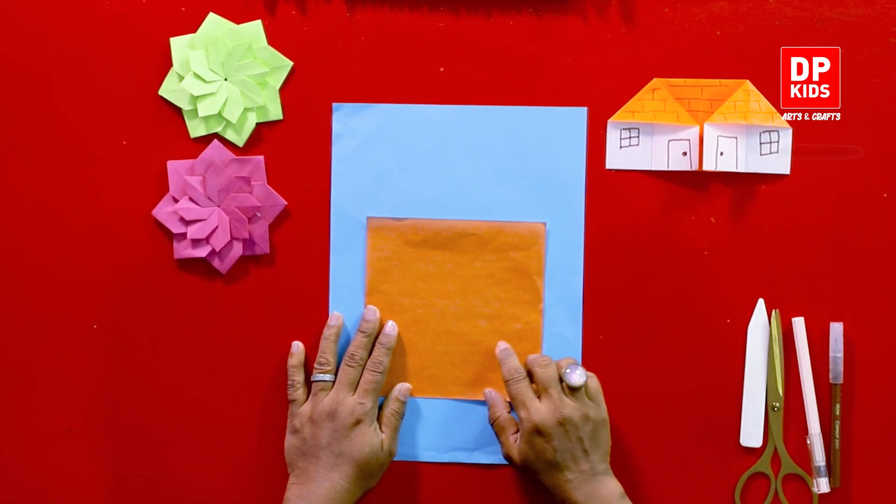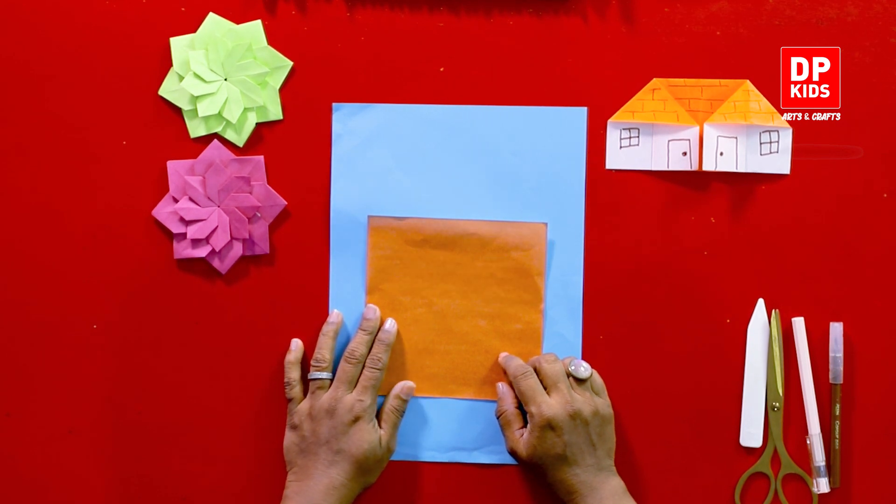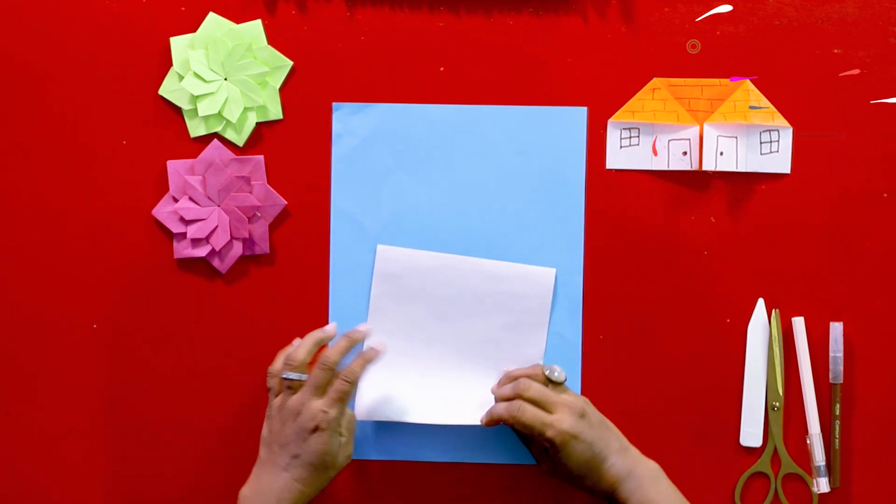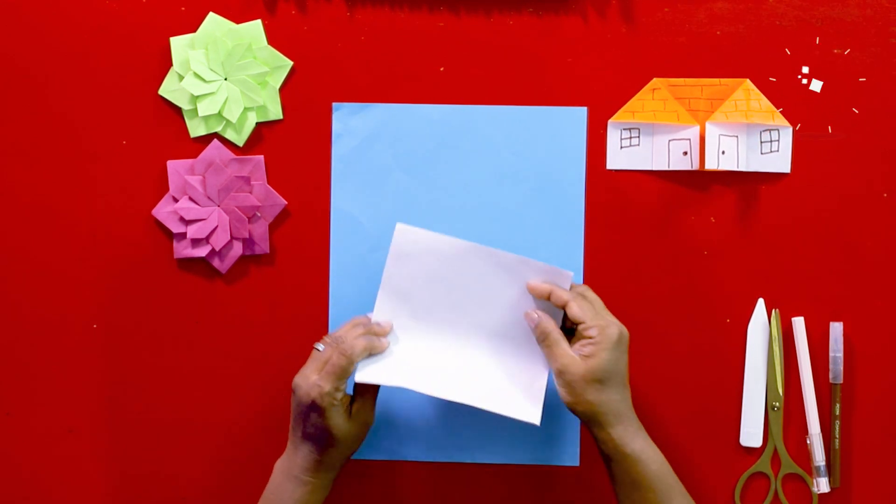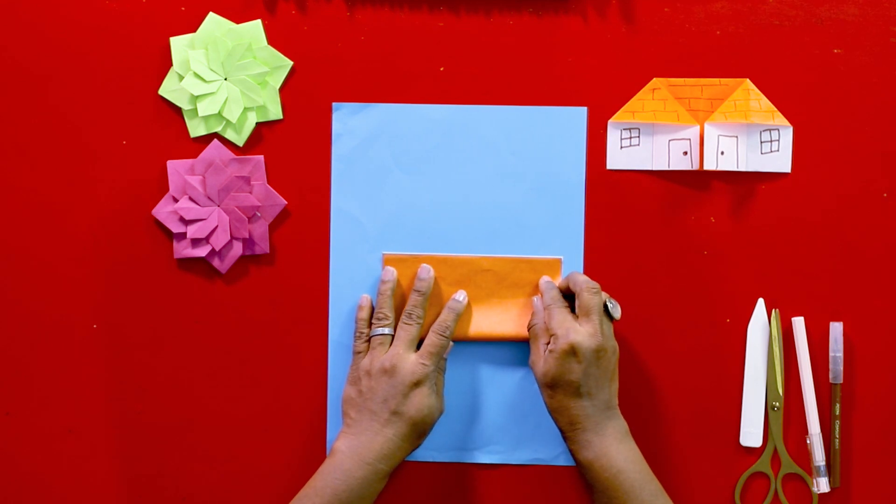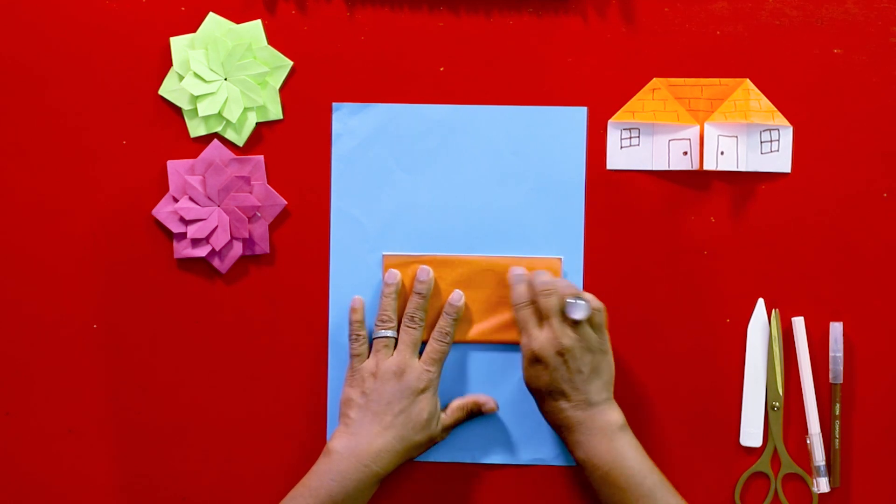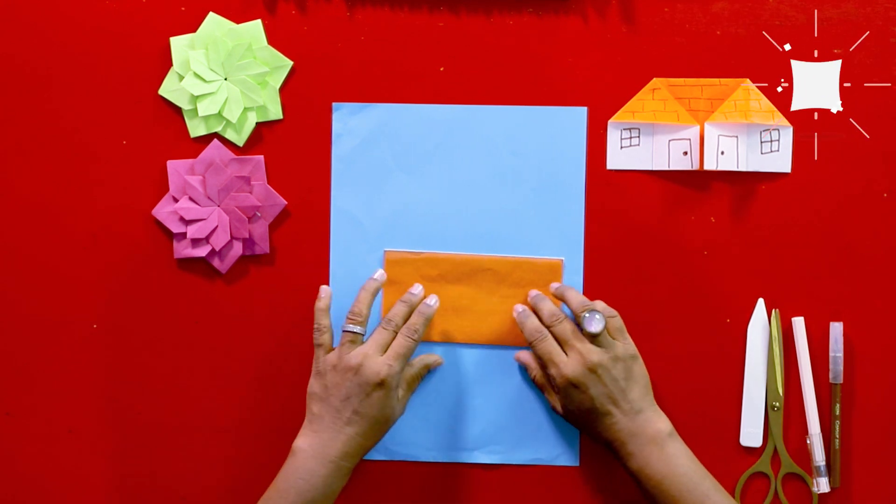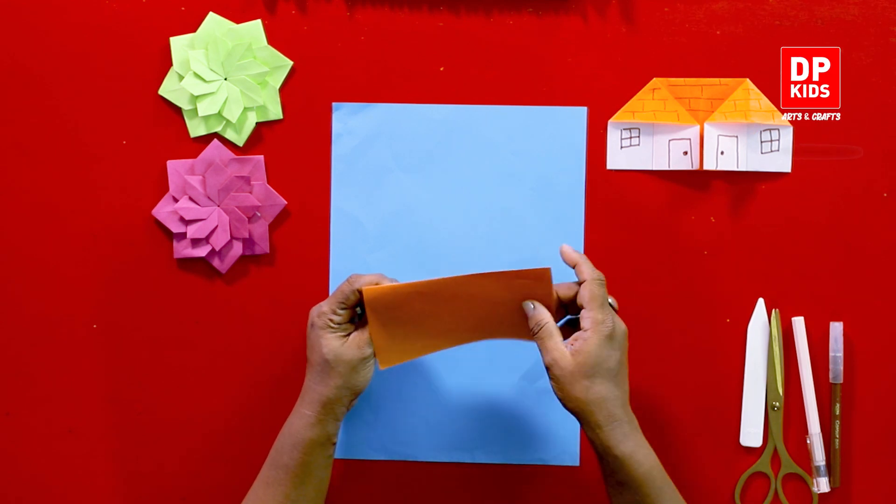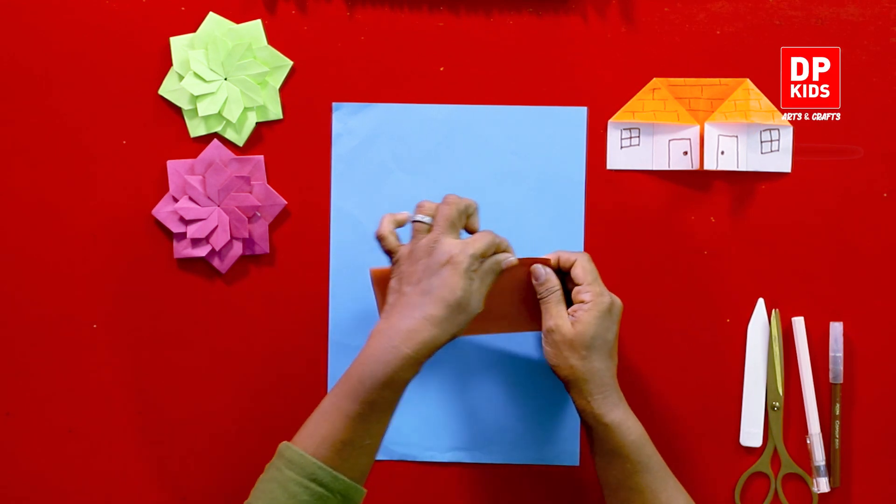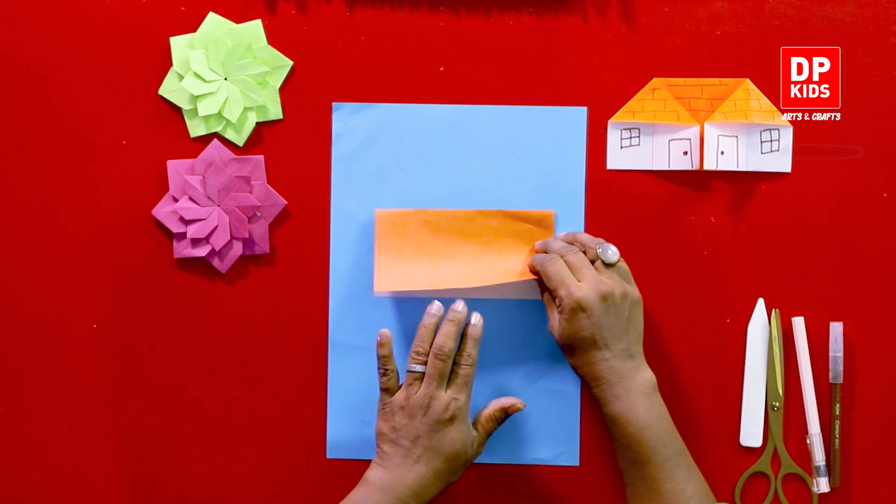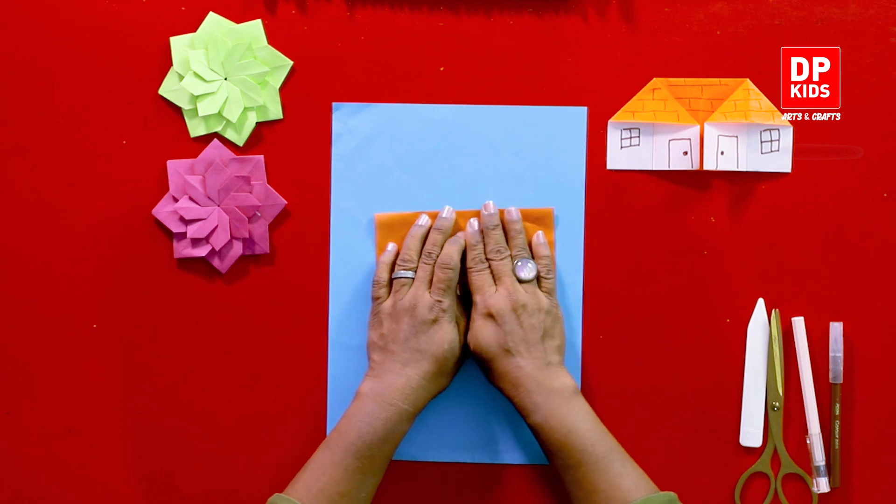Now as usual we need a square piece of paper, you can use any color and any size. Now I'm going to fold it to the half so that we get a rectangular shape like this. Make sure the colored side is up. And now this is the roof, this top part is the roof and the doors are here.